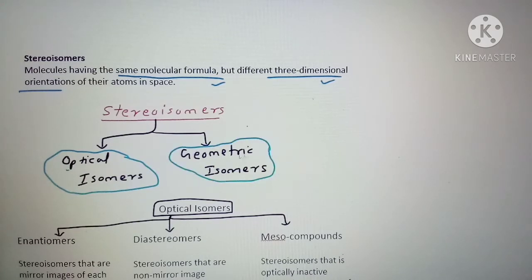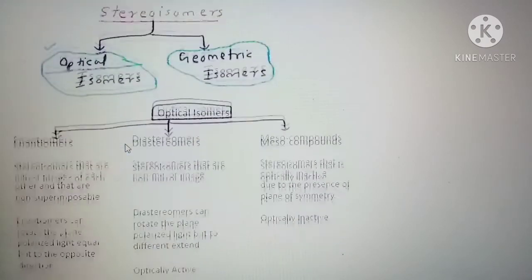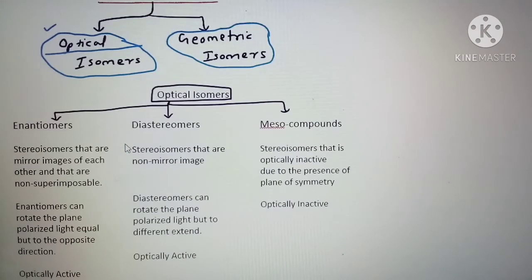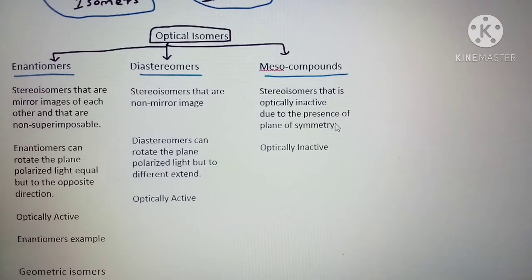As the term indicates, optical isomers can show optical activity, meaning they can rotate plane-polarized light either in the clockwise or anti-clockwise direction. Optical isomers are classified into three types: enantiomers, diastereomers, and meso compounds. We need to know the definition and at least one example of each.